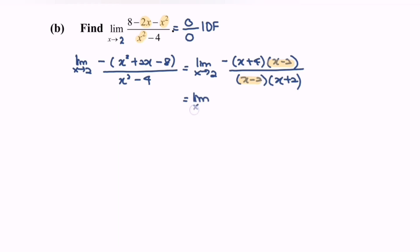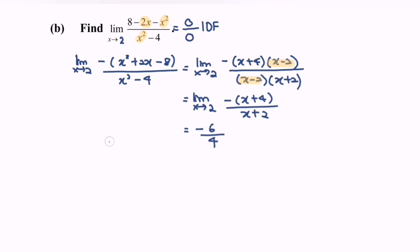Limit when x approaching 2: negative times (x plus 4) over (x plus 2). Substitute the value 2, and we will have negative 6 over 4. So the limit when x approaching 2 for the function 8 minus 2x minus x squared over x squared minus 4 equals negative 3 over 2.